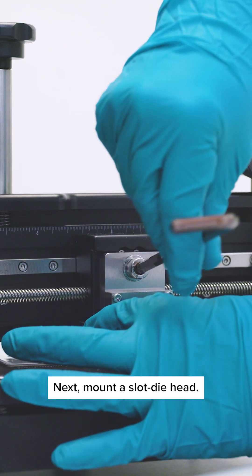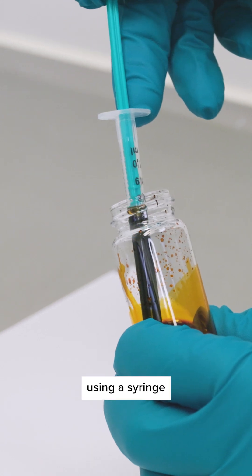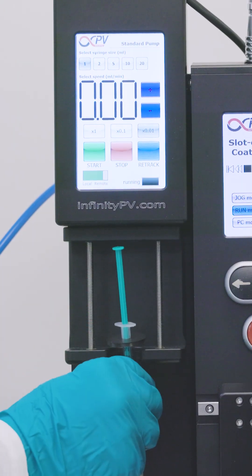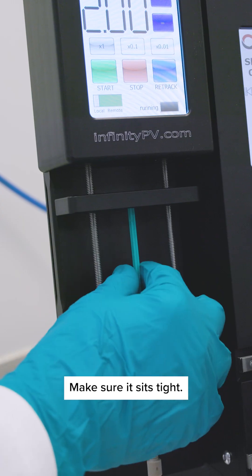Next, mount a slot die head. Extract the active ink using a syringe and connect it to the slot die head using a fitting kit. Attach the syringe to the pump and make sure it sits tight.